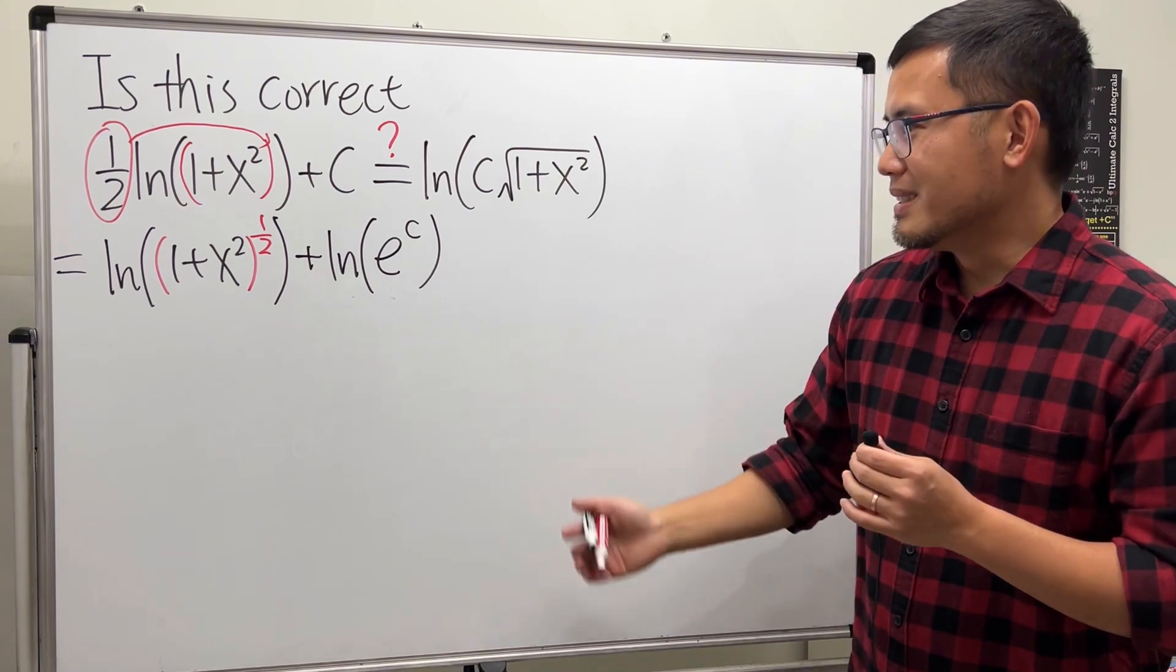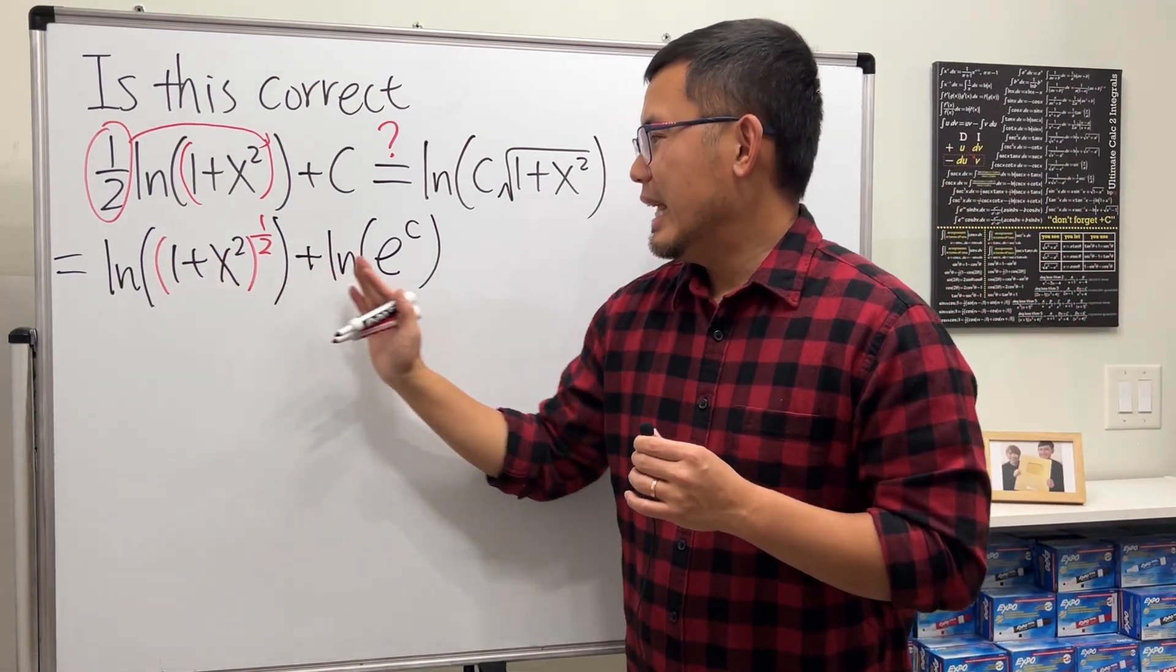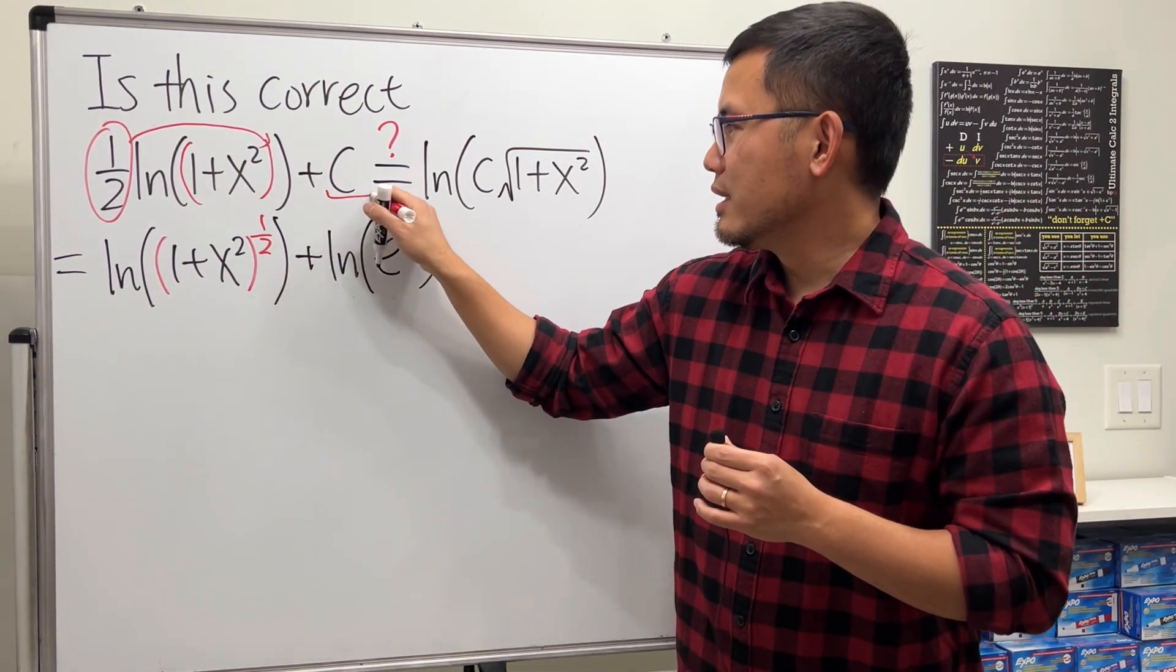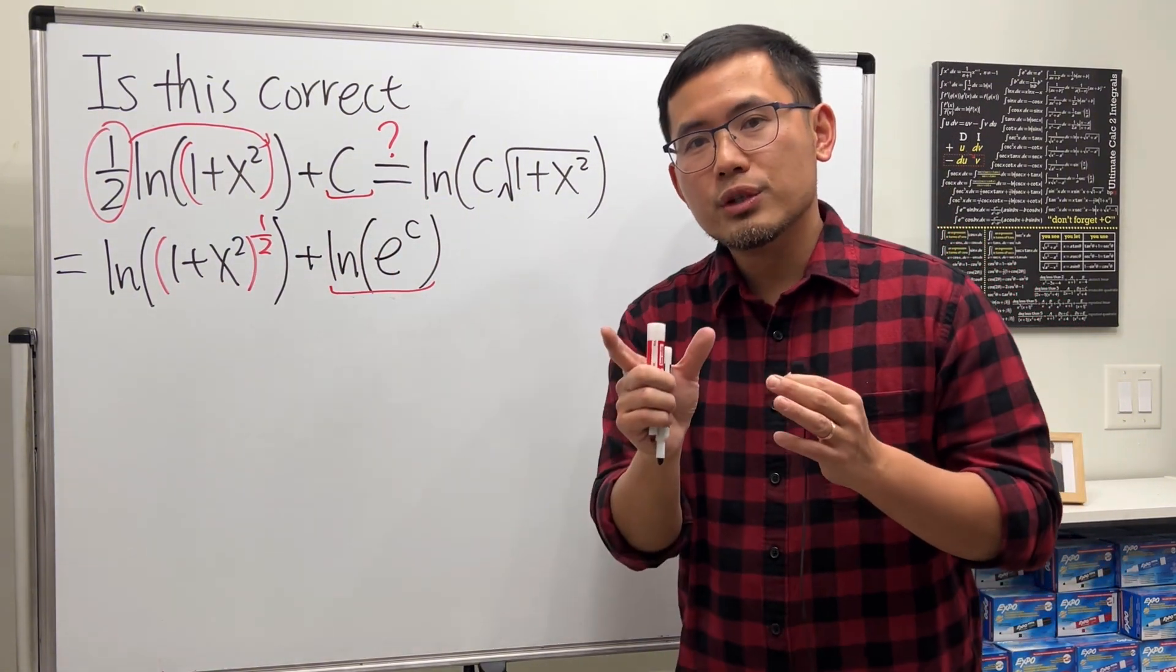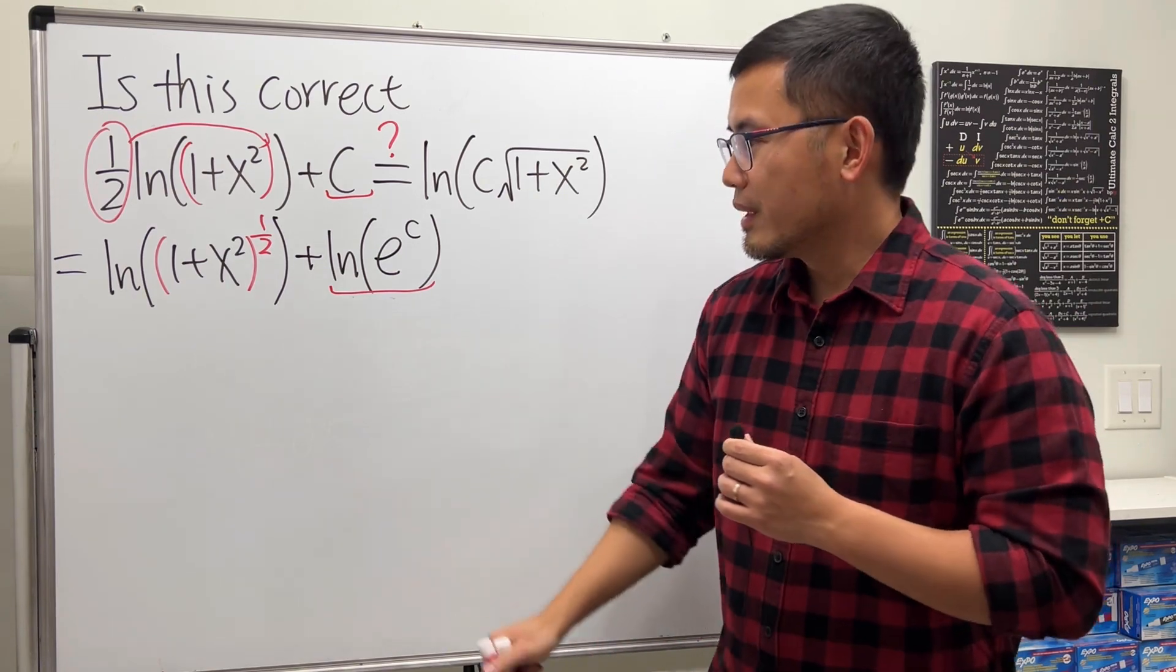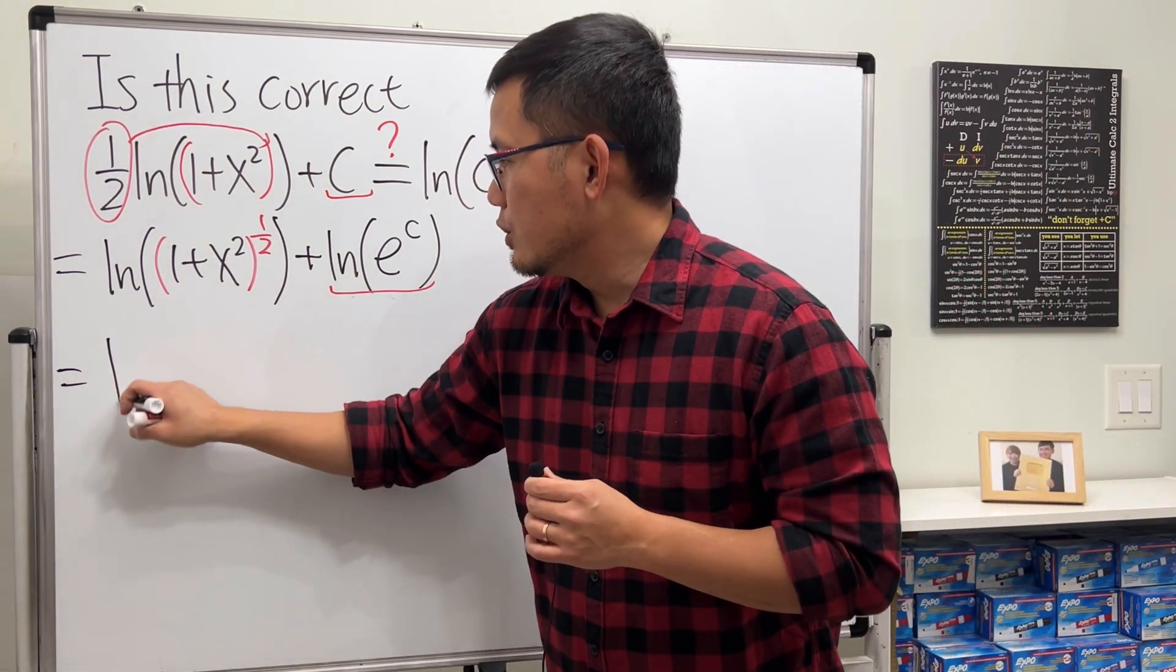All right, cool. Now this and that, this right here is really just the same as c. This and that, we have two natural logs adding. We can just multiply the inside together, therefore we will have just one ln.